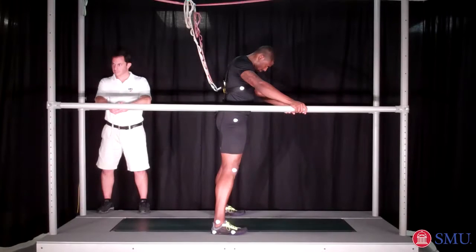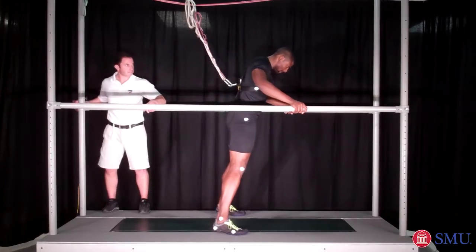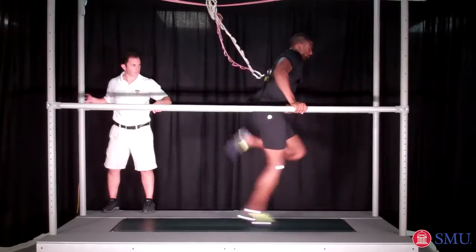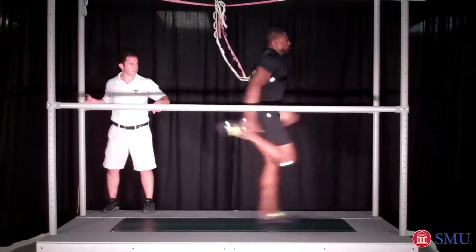This is world champion and gold medalist in the 110 meter hurdles, David Oliver, running at 10.2 meters per second on the SMU high speed force treadmill.